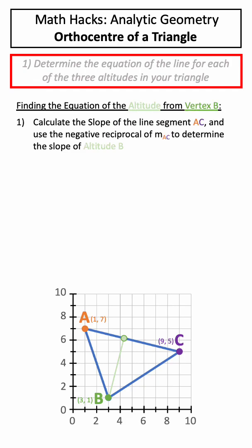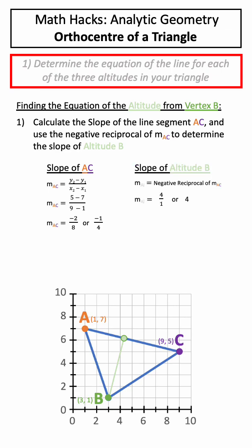The first thing we'll do is determine the slope of line segment AC, and then use the negative reciprocal of this to determine the slope of altitude B.